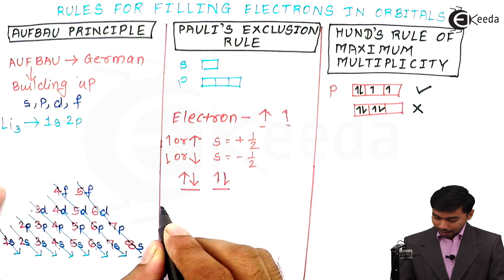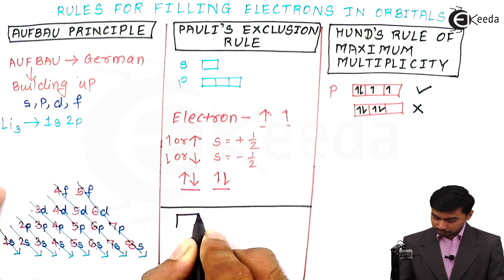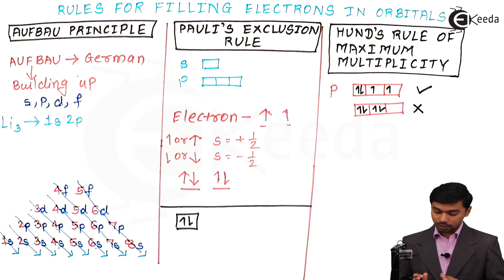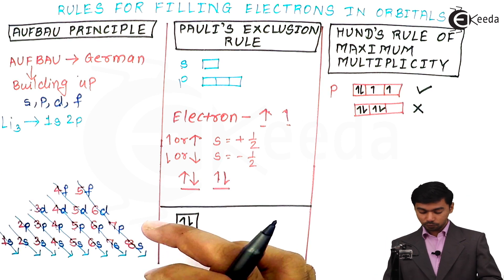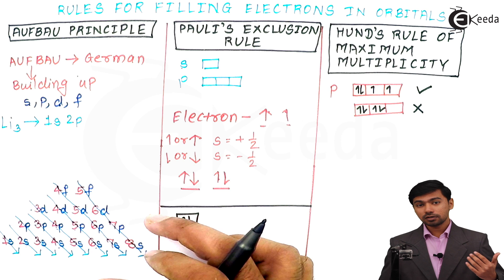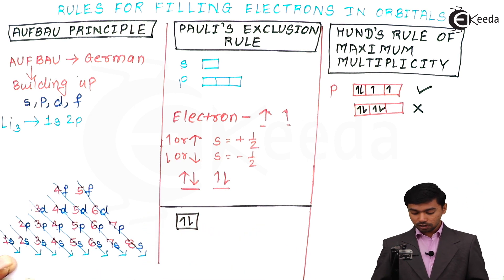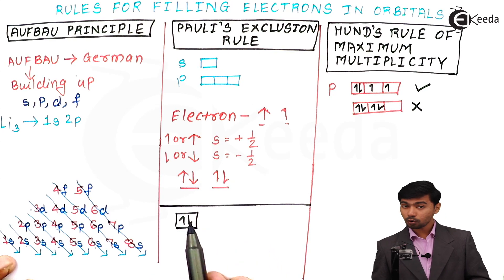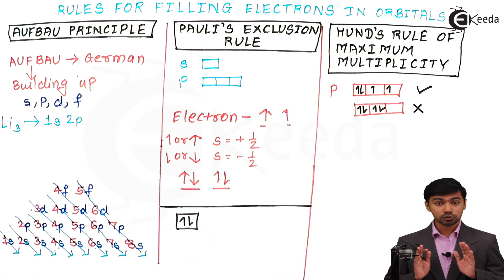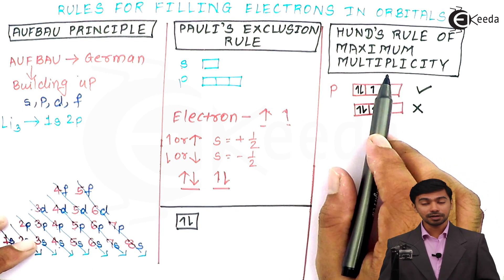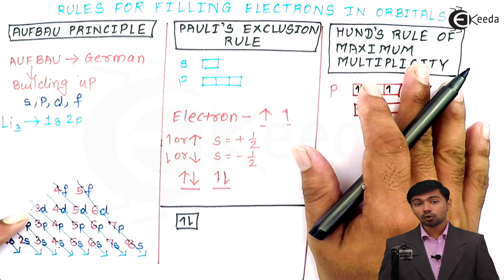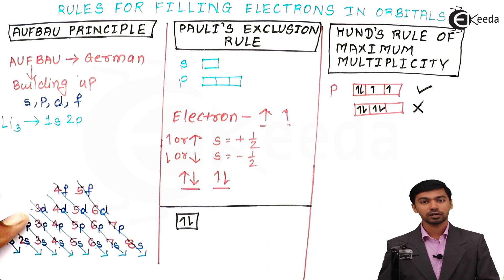According to Pauli, each orbital can contain only two electrons maximum — one ascending and one descending. To summarize: the Aufbau principle gives us a pyramid showing increasing energy order for filling electrons in orbitals. Pauli's exclusion rule states that each orbital holds maximum two electrons with opposite spin. Hund's rule of maximum multiplicity states that we cannot pair electrons before filling one electron into each available orbital first.